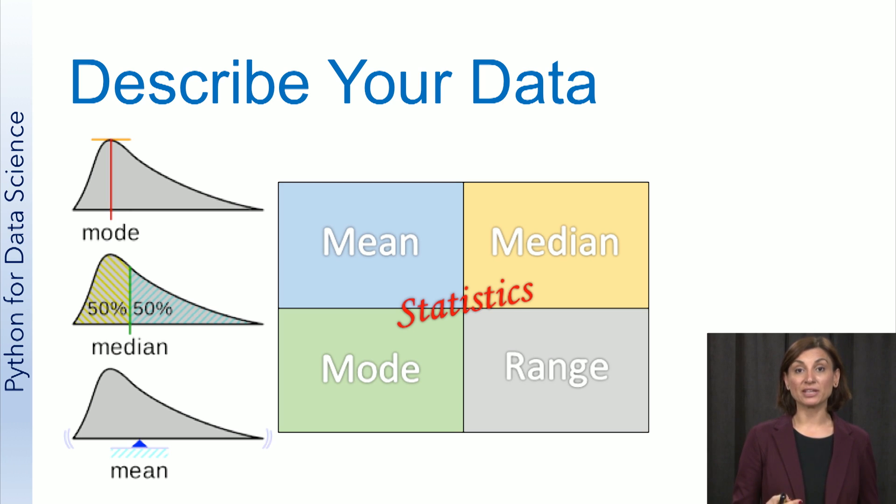Mean and median are measures of the location of specific values. Mode is the value that occurs most frequently in your data set. Range and standard deviation are measures of spread in your data. Looking at these measures will give you an idea of the nature of your data. They can tell you if there is something wrong with your data. For example, if the range of the values for age in your data includes negative numbers or a number much greater than 100, there is something suspicious in the data that needs to be examined.